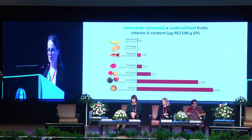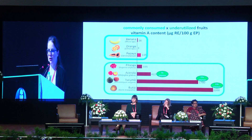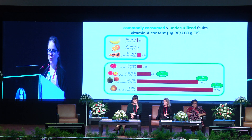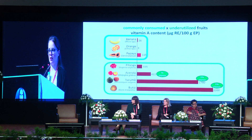Here we have the vitamin A content, comparing the same commonly consumed foods against underutilized ones. For pitanga, we have similar content to what we find in papaya. But when we look at acerola, tucumã, and butiá, we have values that are much higher — 4 times for acerola, 15 times for tucumã, and 19 times for butiá.